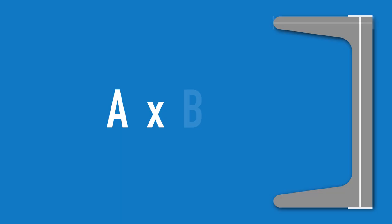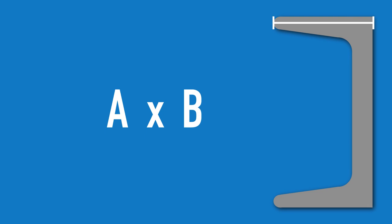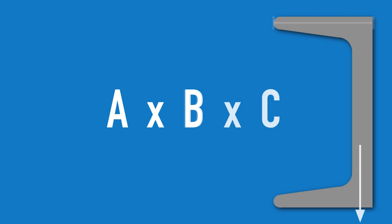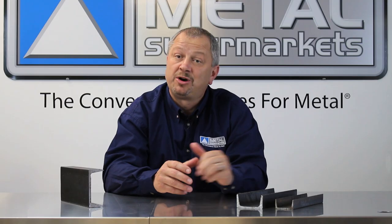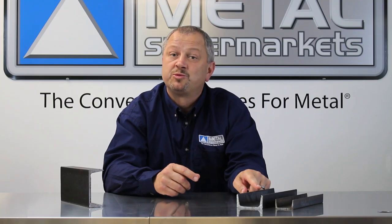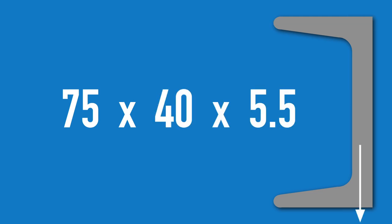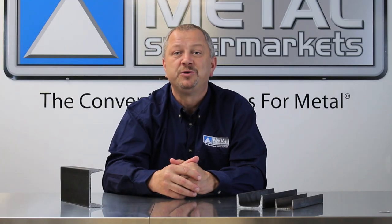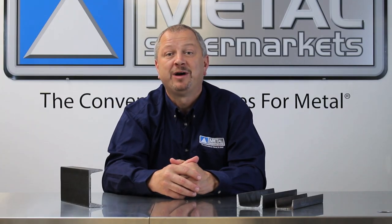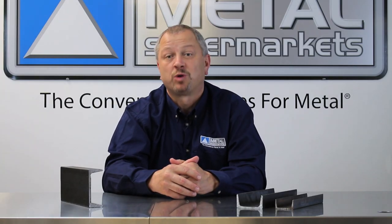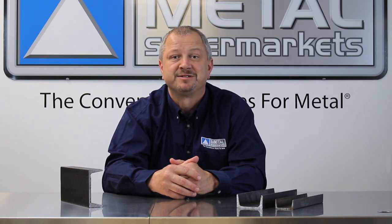In the UK, steel channel — or c-section as it can be called — is measured very similarly to universal beams, using the depth, leg width, and kilograms per meter. So this would be a 75mm by 40mm by 5.5 kilogram per meter channel. Hopefully this video will help you the next time you have a project requiring structural channels.